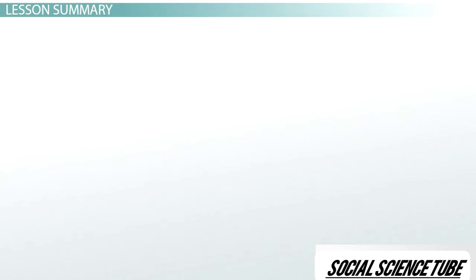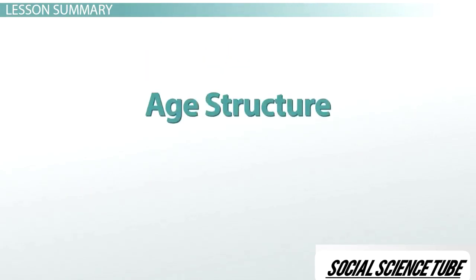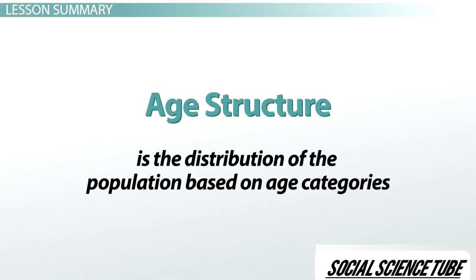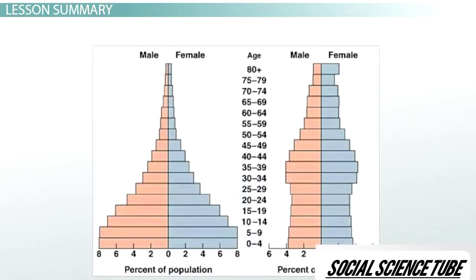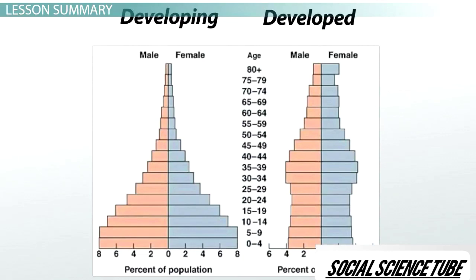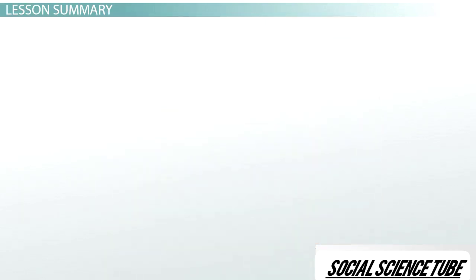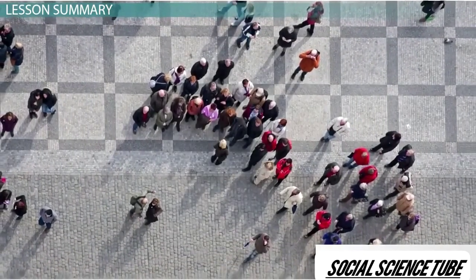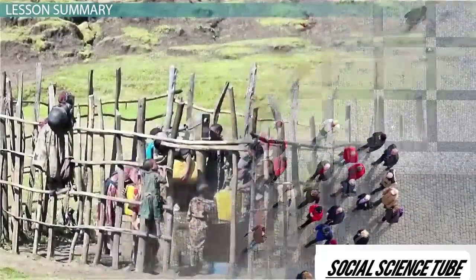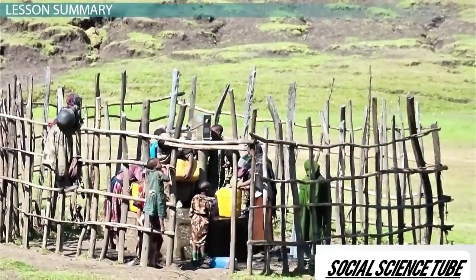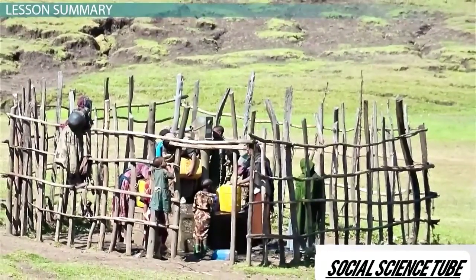The last population characteristic is the population's age structure, which is the distribution of the population based on age categories. The age structure in developed countries is evenly distributed, while the age structure of developing countries is skewed towards younger age categories due to high fertility rates and low survivorship. These characteristics are a general overview of differences between developing and developed countries, and each country has unique components of their own population.